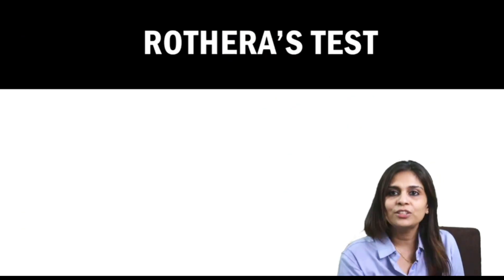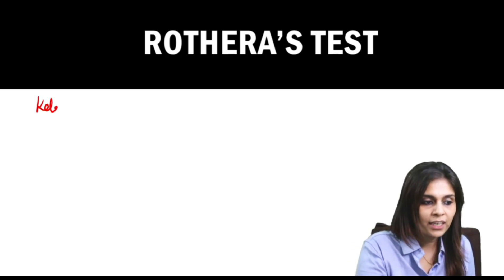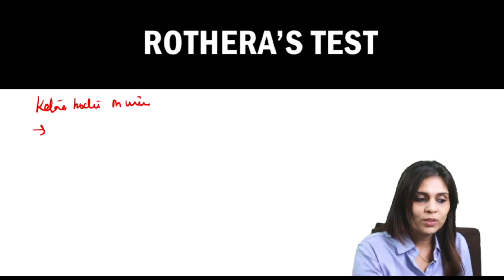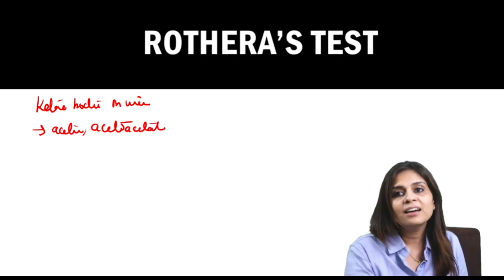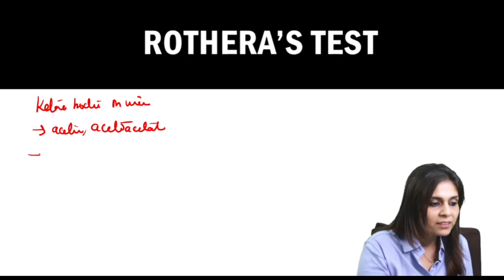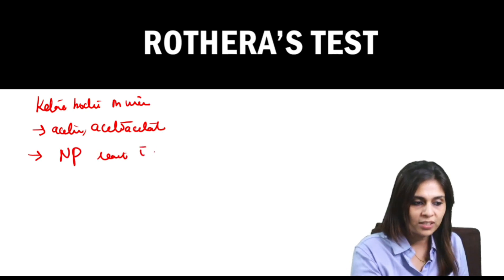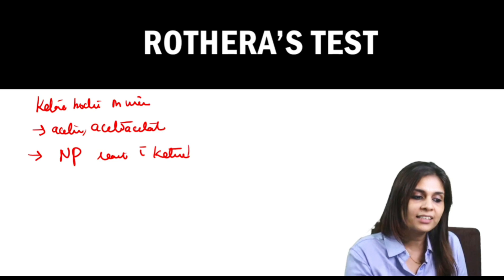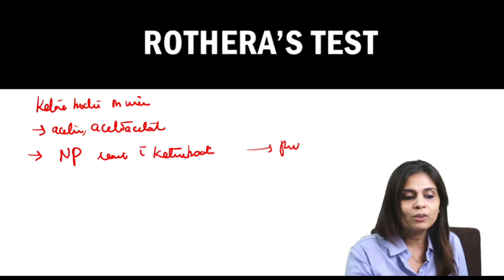Let's discuss Rothera's test quickly. Rothera's test is done to detect ketone bodies in urine. Though there are three ketone bodies, Rothera's test is answered only by acetone and acetoacetate — it is not answered by beta-hydroxybutyrate. The principle of Rothera's test is: sodium nitroprusside reacts with ketone bodies in the presence of an alkaline medium to give a purple-colored complex.